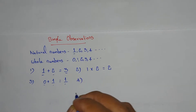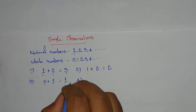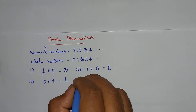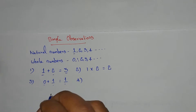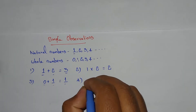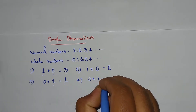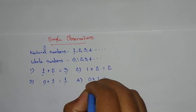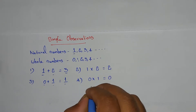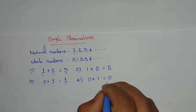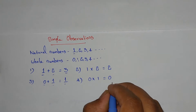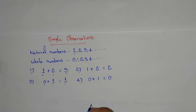Fourth observation: if we multiply two whole numbers, we will get a whole number only. For example, 0 into 1 equals 0. So multiplying two whole numbers always gives a whole number.